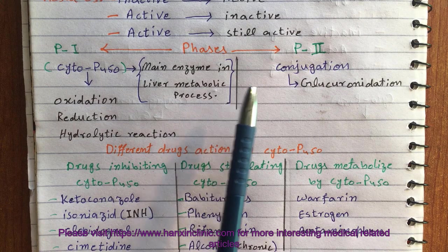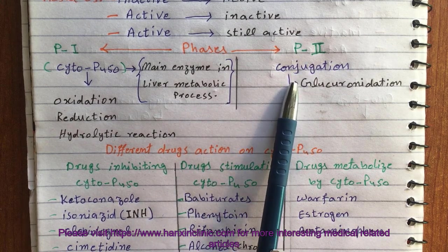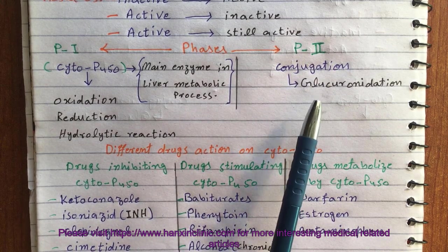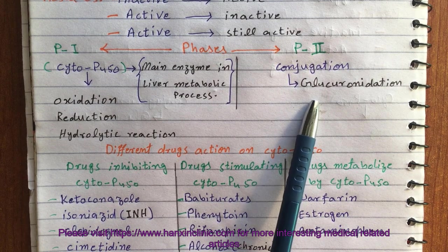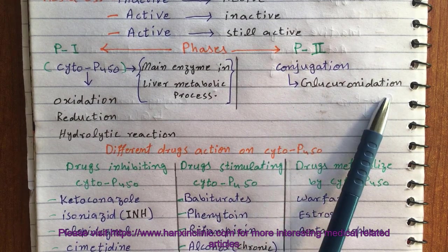On the other hand, in phase 2 we will find conjugation, the subtype of which is glucuronidation.